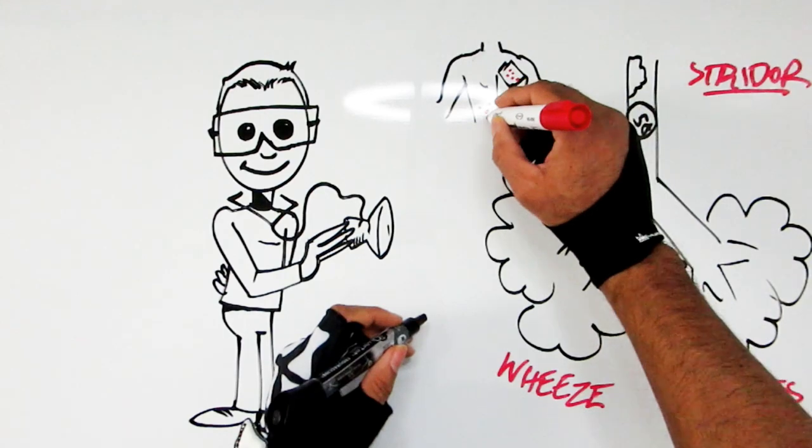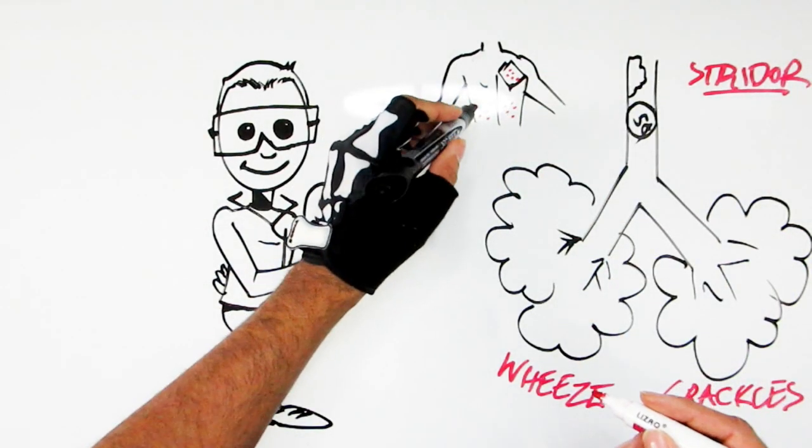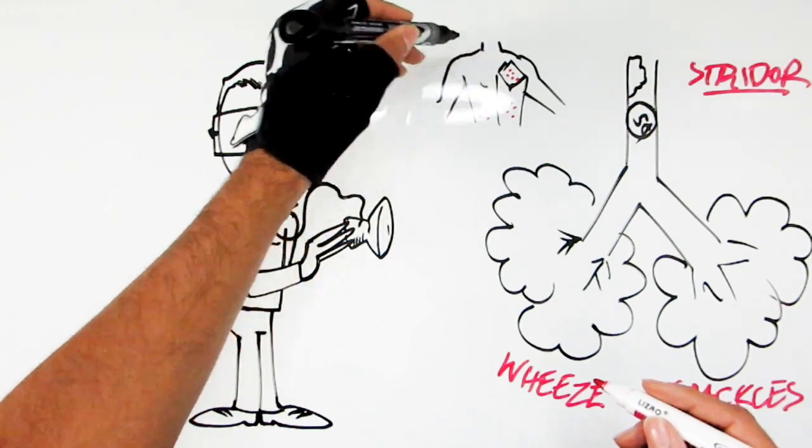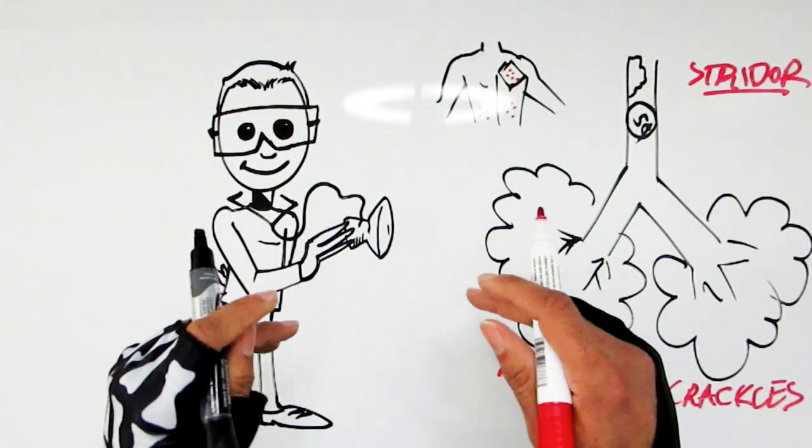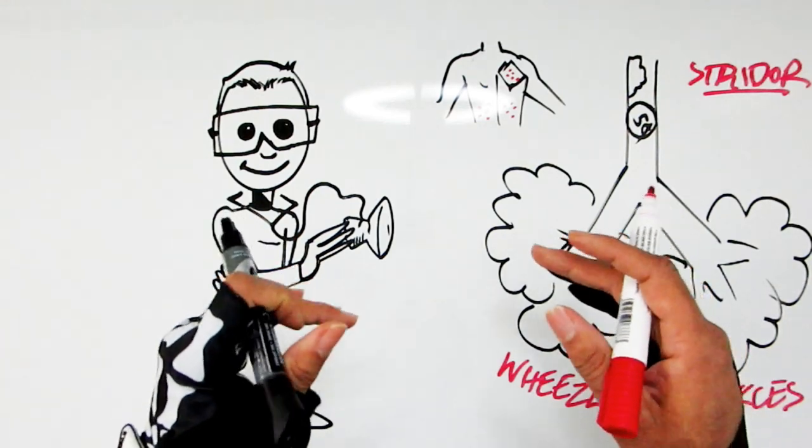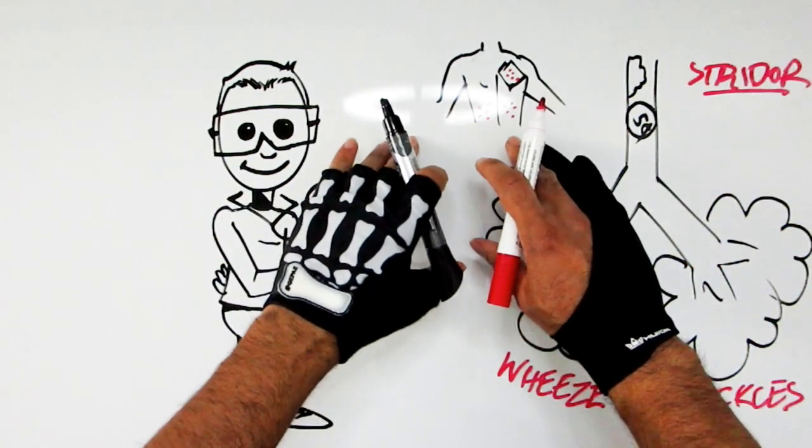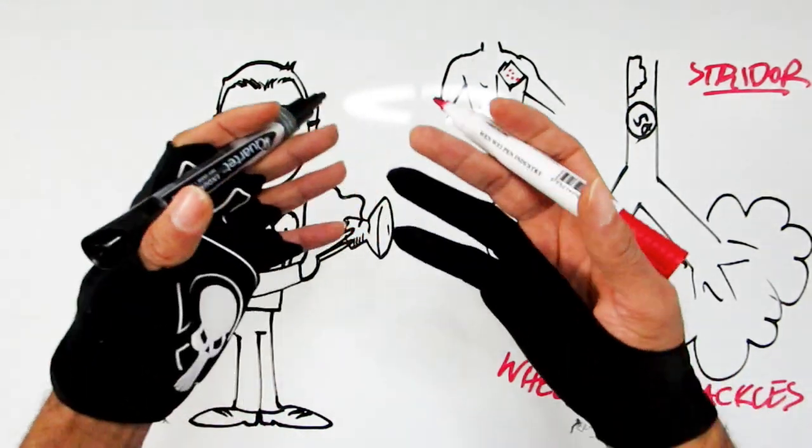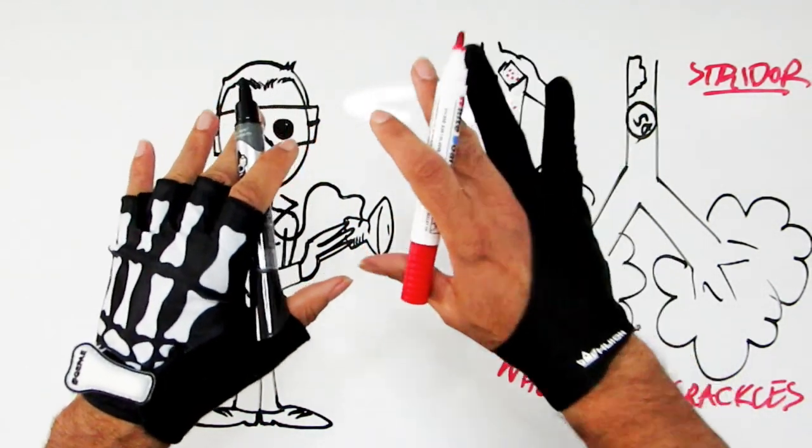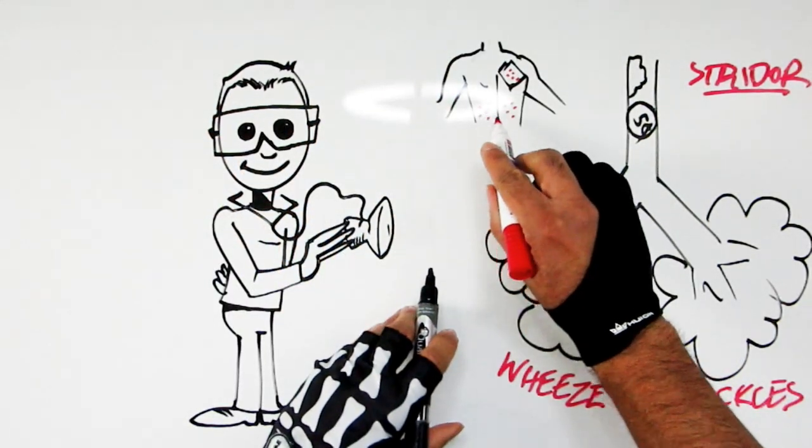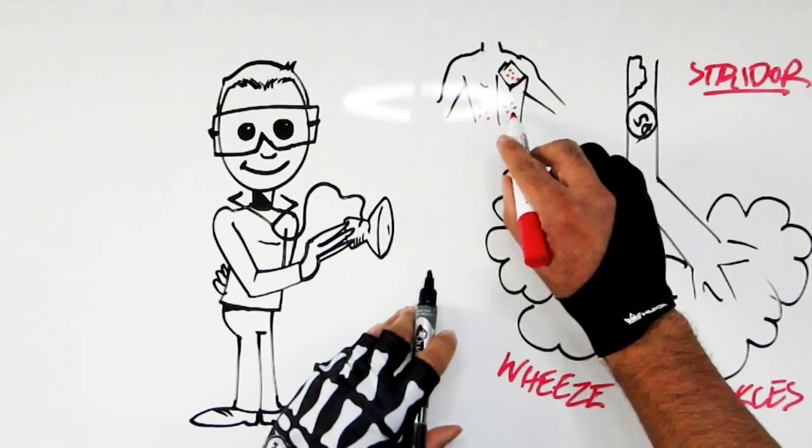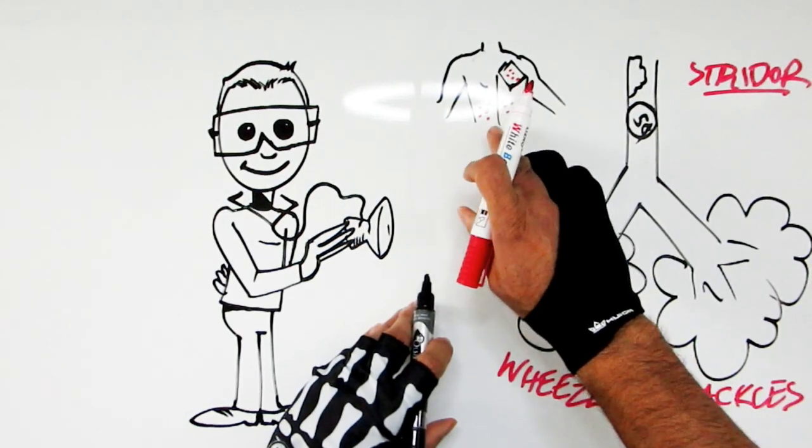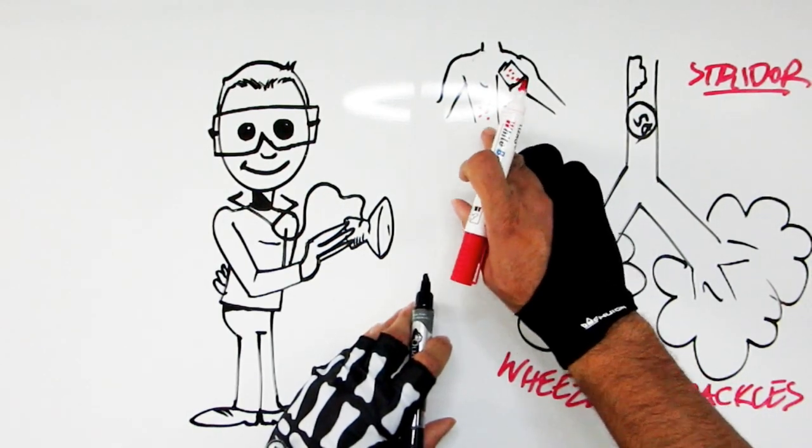Then another type of crackles is gravity dependent. So it's all across the bases. So when I listen at this person's back here I'm hearing crackles all across the bases. These upper zones here are clear and free. That tends to suggest not so much infection, sometimes infection, but more often something called heart failure where fluid builds up in the lungs and because of gravity pulling the fluid down it makes it relegates it to the bases. So call it the basement of the lungs.